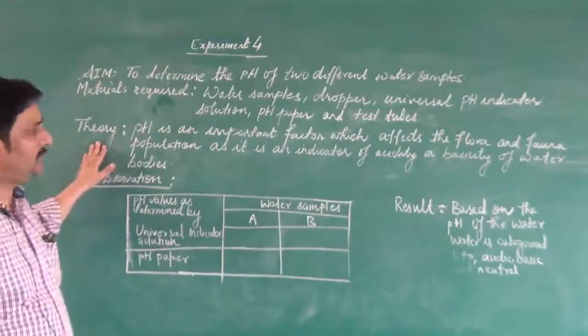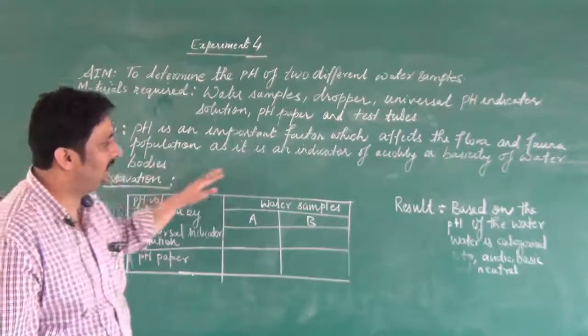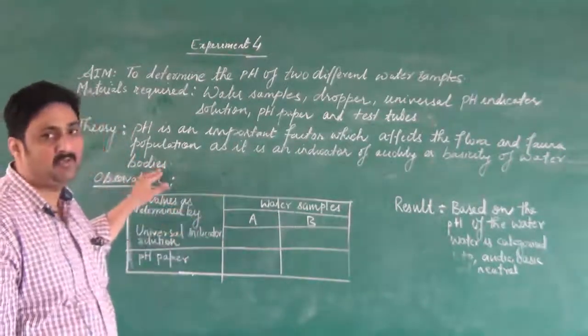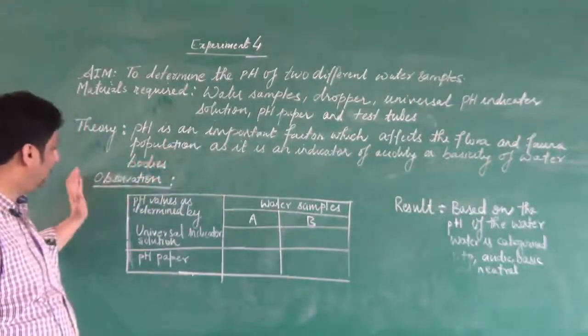pH is an important factor which affects the flora and fauna population. It is an indicator of acidity or basicity of water bodies. This is very important.